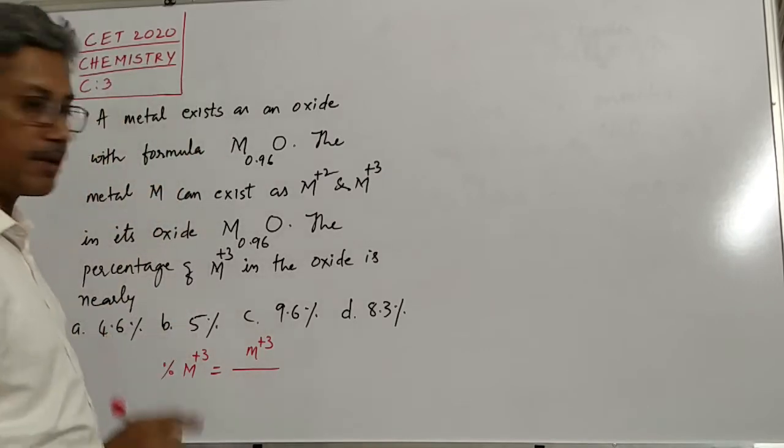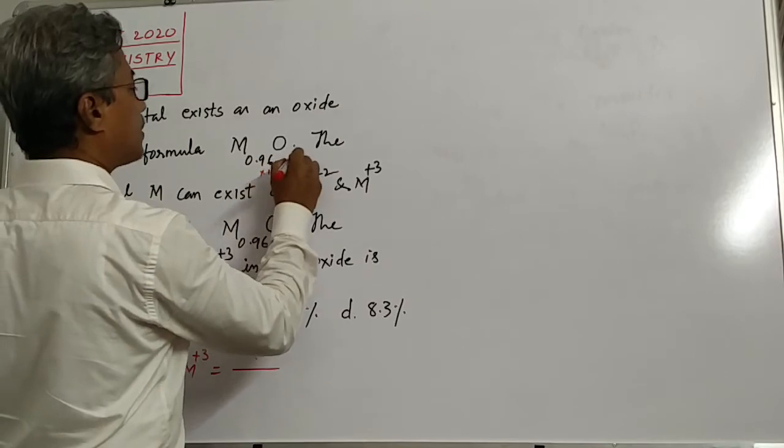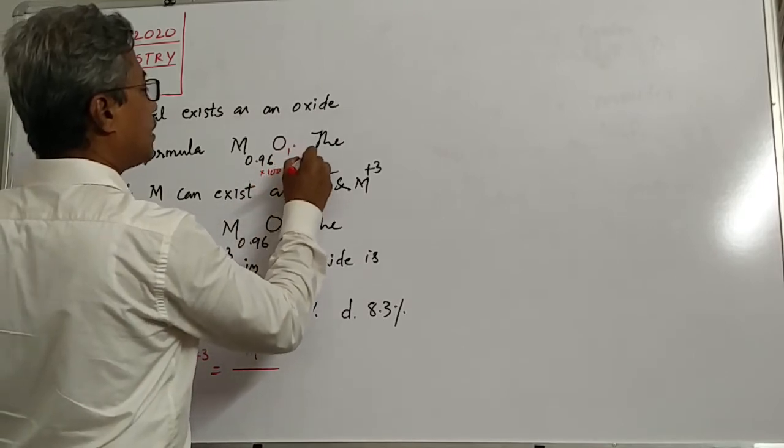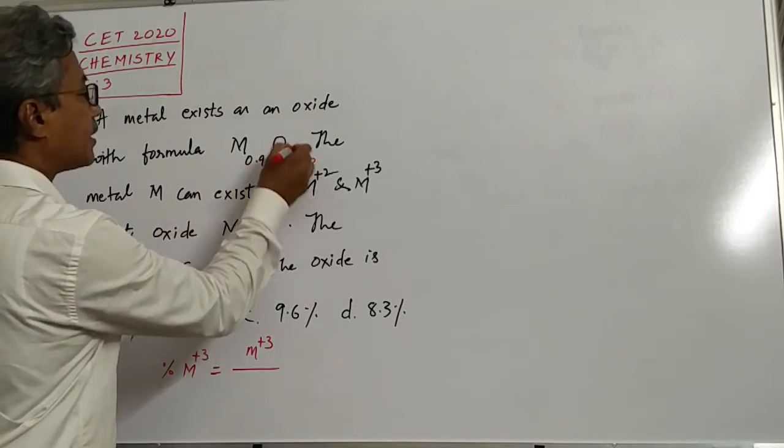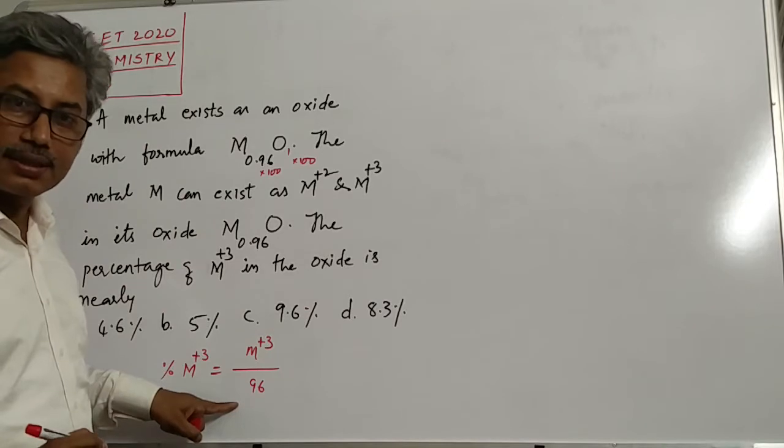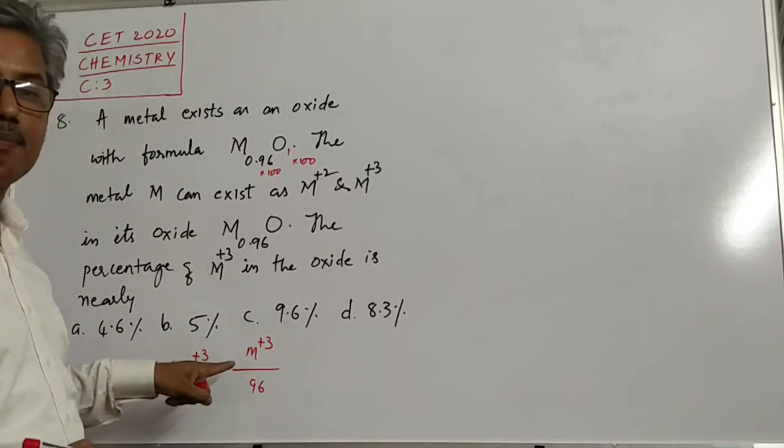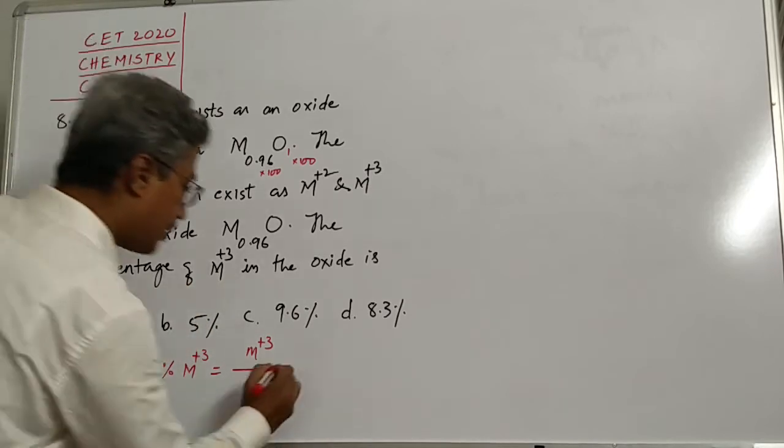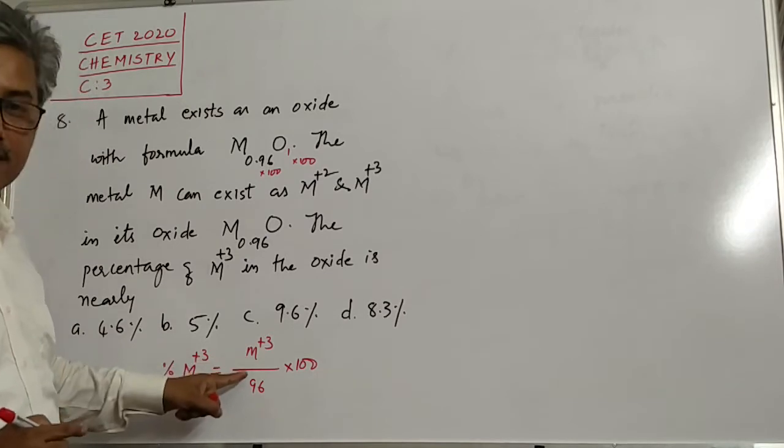There will be total, total is either you make it as, so you multiply it by 100 for simplicity. This is 1 into 100. So then it will become 96. 96 and this is 100. So this will be 96. Total M is 96. Out of total M, how many M plus 3 are present, that you will have to calculate into 100. This will give you the percentage of M plus 3.